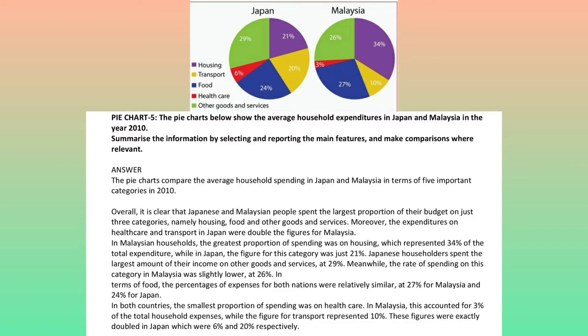The pie charts compare the average household spending in Japan and Malaysia in terms of five important categories in 2010. Overall, it is clear that Japanese and Malaysian people spent the largest proportion of their budget on just three categories, namely housing, food, and other goods and services.